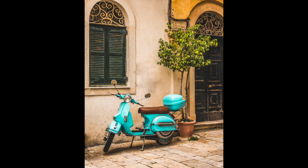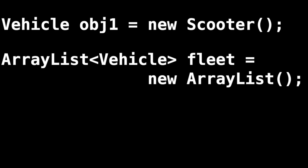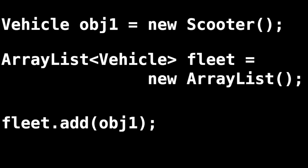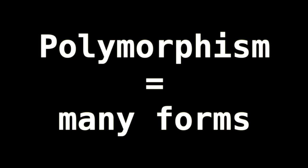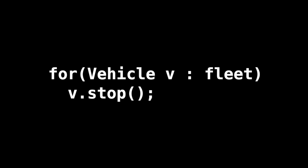Polymorphism. Here we have a scooter — it's a type of vehicle, which means if we have a Scooter class in our program, it can extend Vehicle and inherit all those lovely methods we put in the Vehicle class to begin with. Now we can create instances of our vehicle that are specifically scooters. Since they're also of type Vehicle, we can put them in an ArrayList of vehicles. Here we see some Java code that creates a fleet of vehicles and then adds our scooter to that fleet.